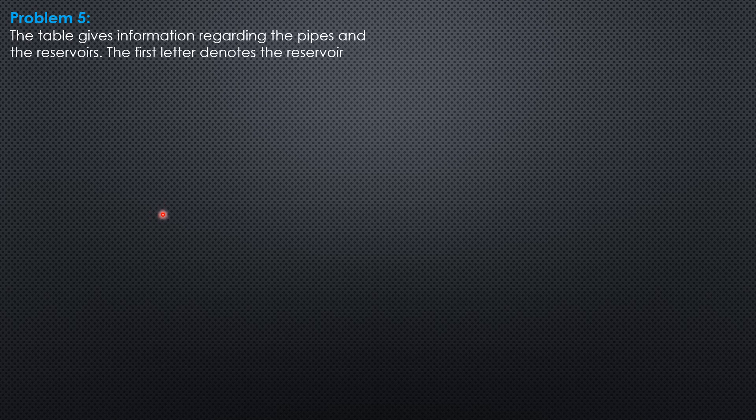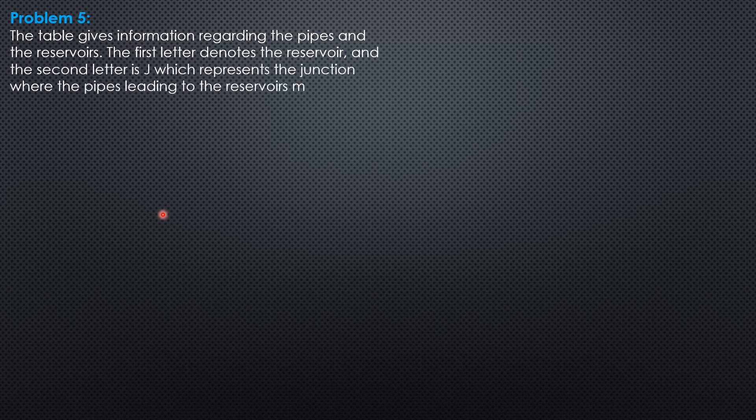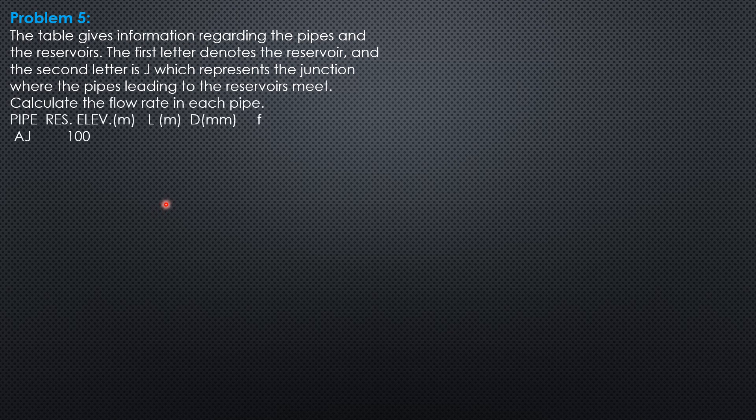Example 5. The table gives information regarding the pipes and the reservoirs. The first letter denotes the reservoir and the second letter is J, which represents the junction where the pipes leading to the reservoirs meet. Calculate the flow rate in each pipe.